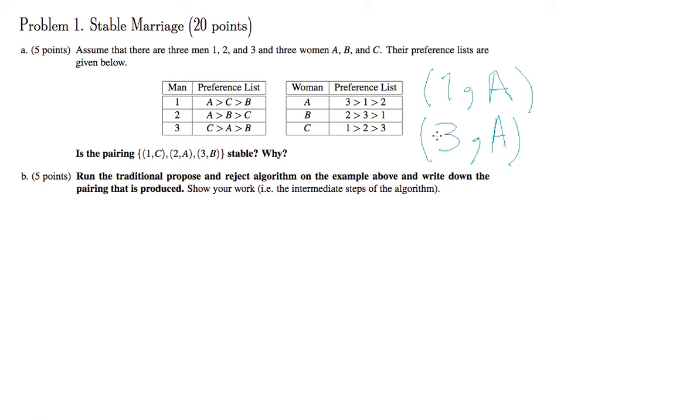Well, what is his current partner? 3 is matched with B. So in his current preference list, B is located here and A is located above B. So 3 would ditch his current partner for A.